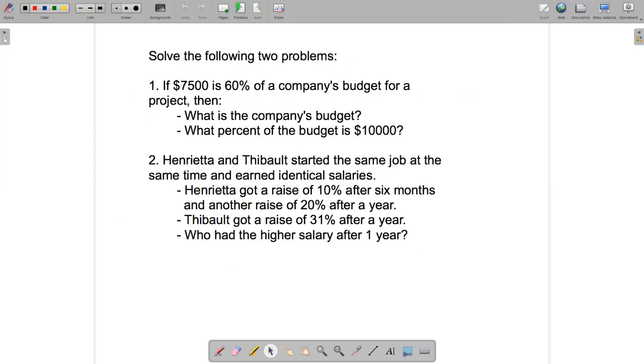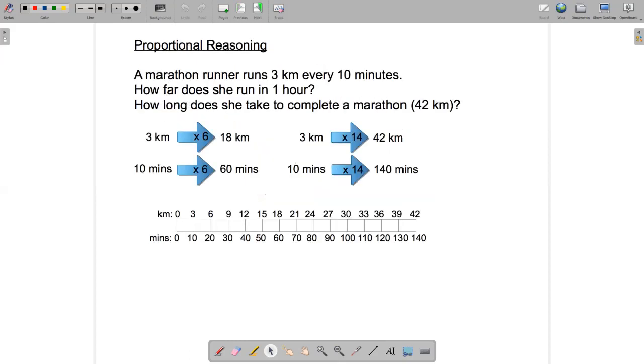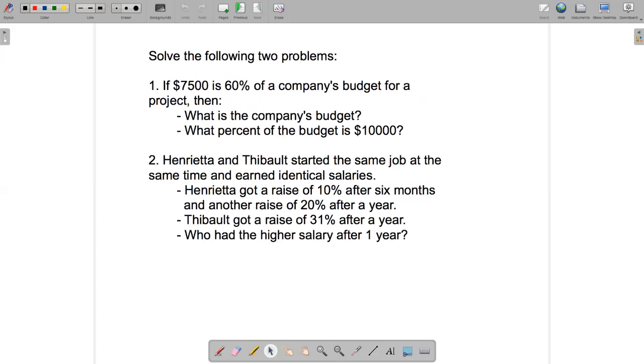That brings us to two questions. So the first question is if $7,500 is 60% of a company's budget for a project, then what is the company's budget? And what percent of the budget is $10,000? Okay, so this is a similar problem to the first problem we worked through. Remember, the first problem was about the marathon runner using proportional reasoning. So use proportional reasoning here to figure out the answer to question one.